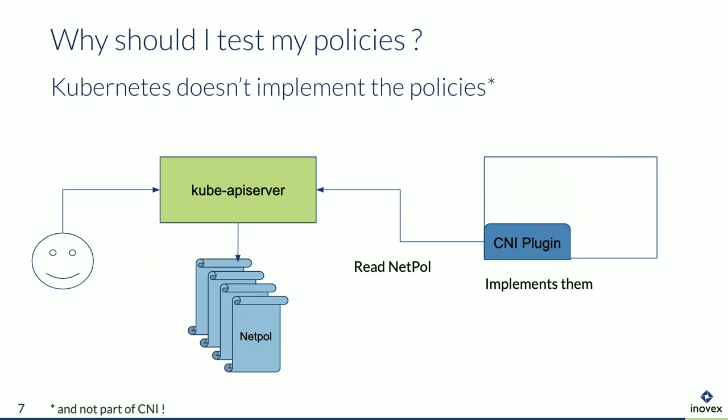The funny part is that Kubernetes doesn't implement the network policies itself — it's just a resource in Kubernetes, and the CNI plugin has to read the network policies and implement them, or not, because network policies are not part of the CNI spec. And the next not-so-funny part is that you don't get any feedback. For example, if you use Flannel or set up a GKE cluster without network policies enabled and you create a network policy, you don't know if it's implemented or not.